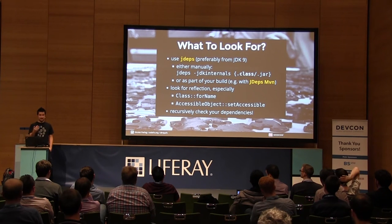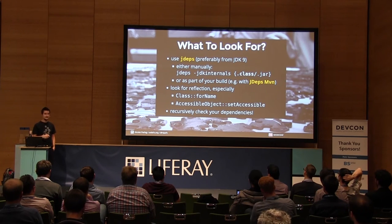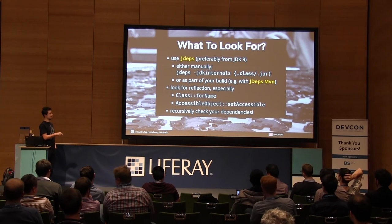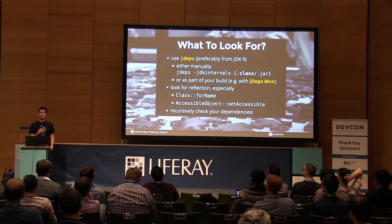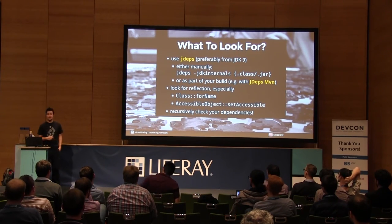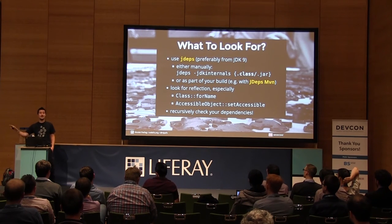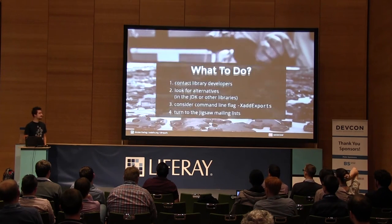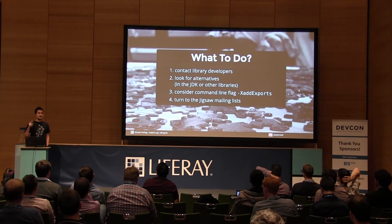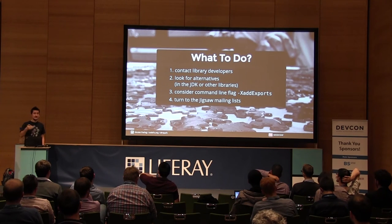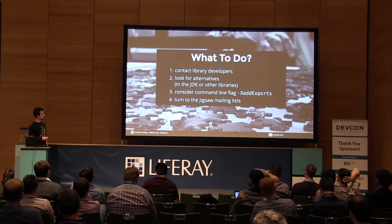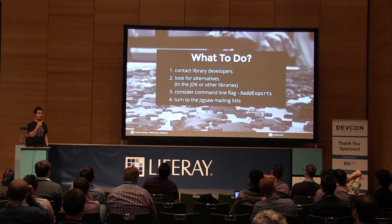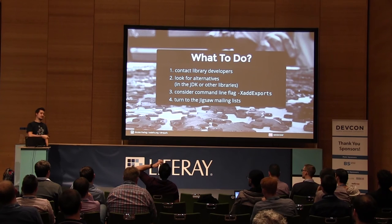Make this part of your build. Once you analyze these cases, prevent relapses. Note this only finds static dependencies — if you use reflection with Class.forName or especially setAccessible calls, those are a giant red flag and won't be detected; you have to grep for those yourself. Also do this for all your dependencies, because if your framework breaks, your boss and customers don't care whose fault it is. If you find something, contact library developers. Look for alternatives within the JDK or other libraries. And if nothing else works, you can use --add-exports on the command line to tell a module to export additional packages.